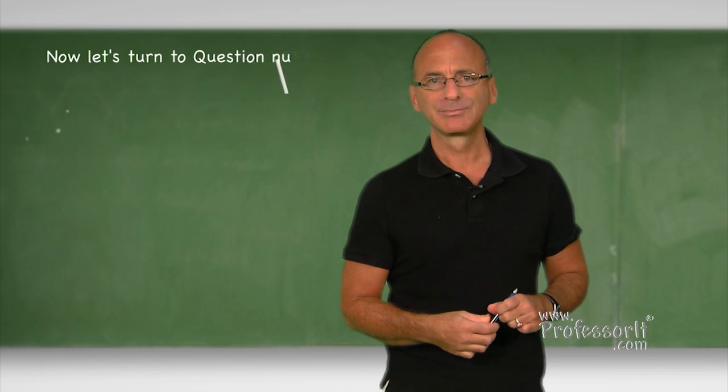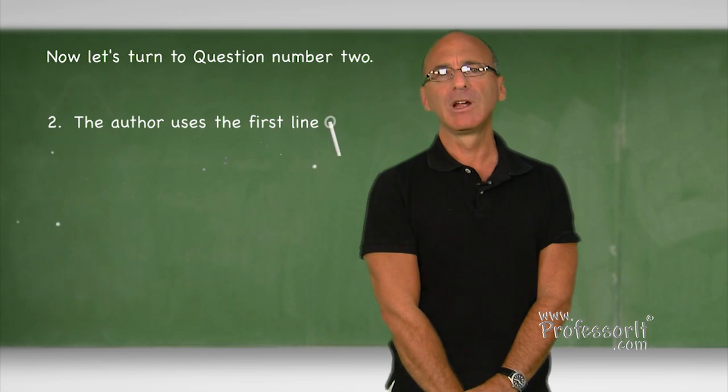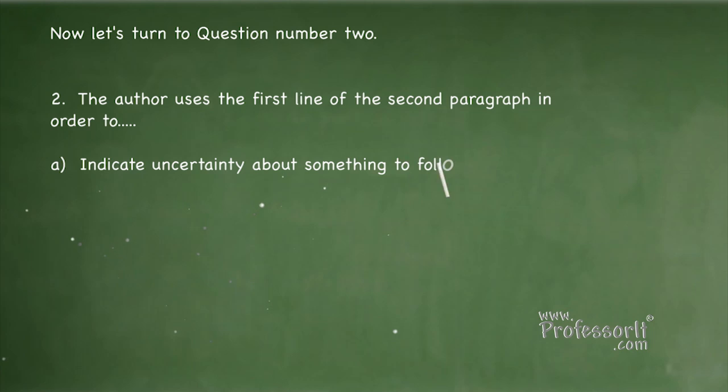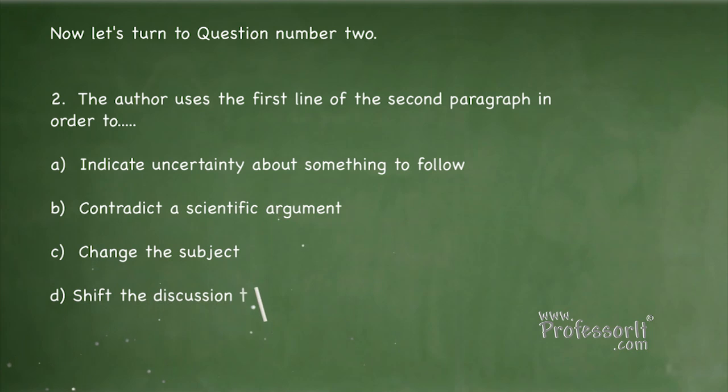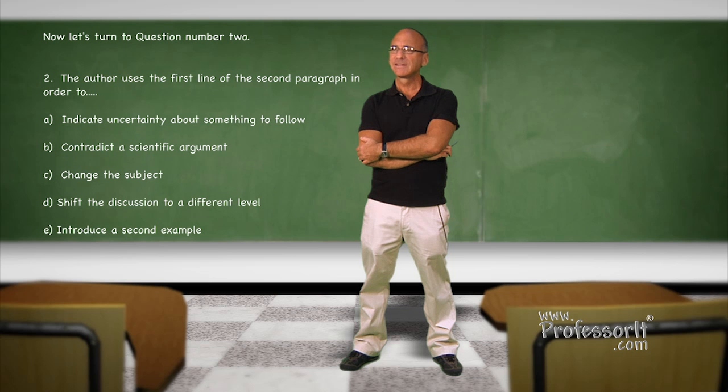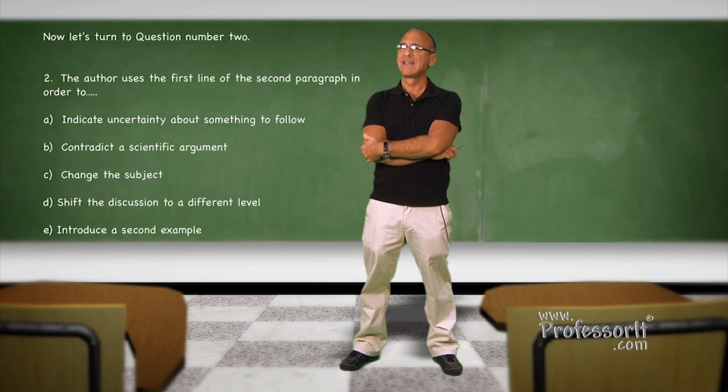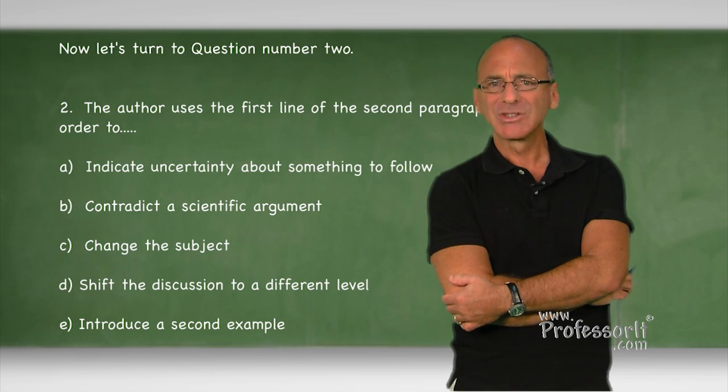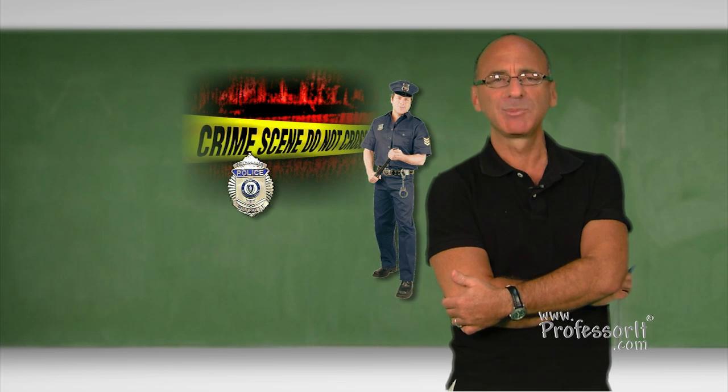Now let's look at question number two. The author uses the first line of the second paragraph in order to A, indicate uncertainty about something to follow. B, contradict a scientific argument. C, change the subject. D, shift the discussion to a different level. Or E, introduce a second example. This kind of question is a common one. The author uses the line in order to. That's like asking why he's doing it. Isn't that a dumb question if you're trying to understand what he's saying? But that's just it. The SAT isn't just interested in what's in the text. Sometimes it wants to know why it's in the text. The same way a policeman might be interested in knowing why a suspect committed a crime. Because they often can figure that out, even if the suspect won't tell them. It's all in the evidence.